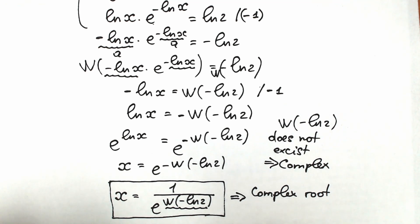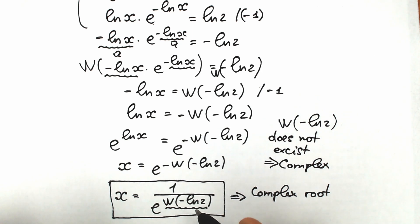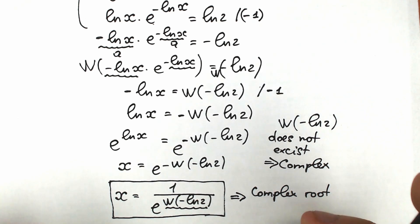If you're sitting in your exam, this is a full solution to your challenge — this is enough. You have your solution: 1 over e to the power Lambert W of minus natural log 2. That is my explanation to this challenge.